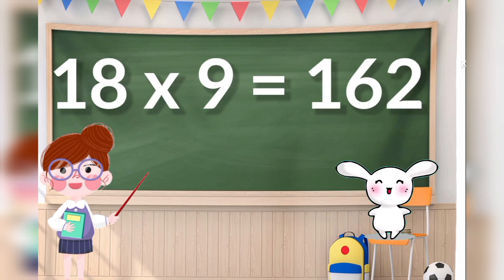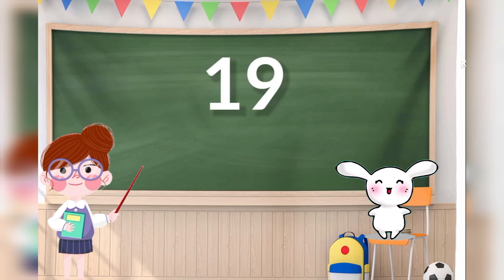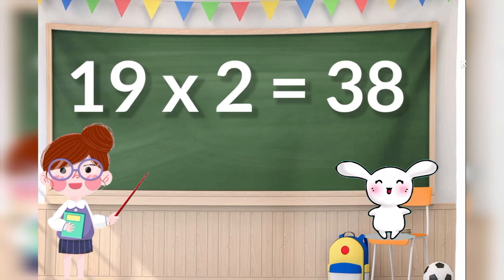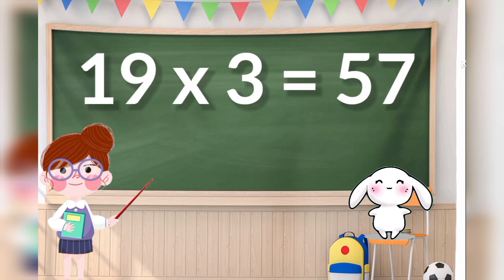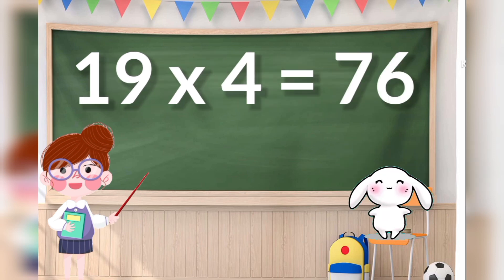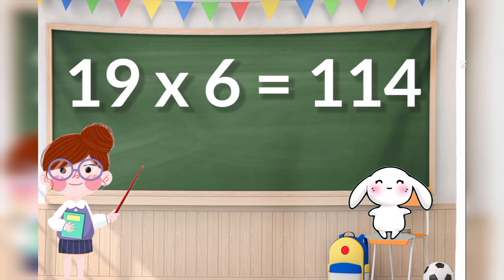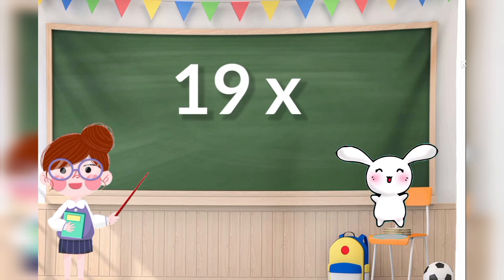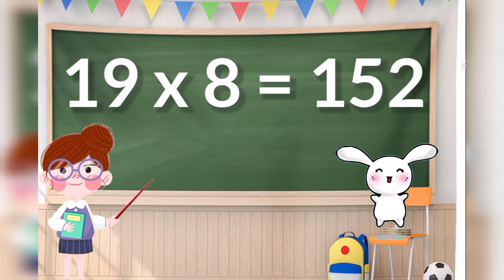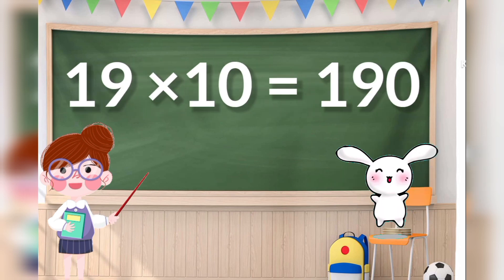18 nines are 162, 18 tens are 180. 19 ones are 19, 19 twos are 38, 19 threes are 57, 19 fours are 76, 19 fives are 95, 19 sixes are 114, 19 sevens are 133, 19 eights are 152, 19 nines are 171, 19 tens are 190.